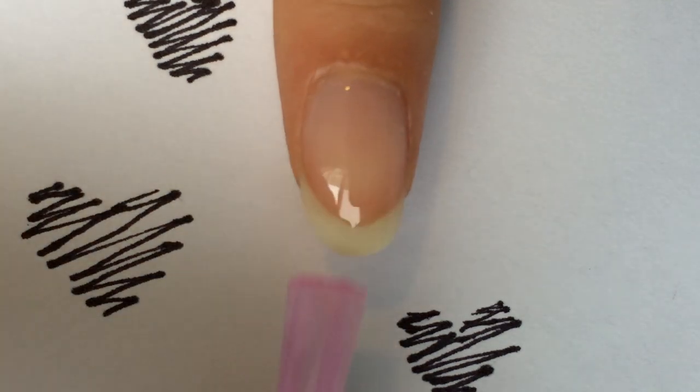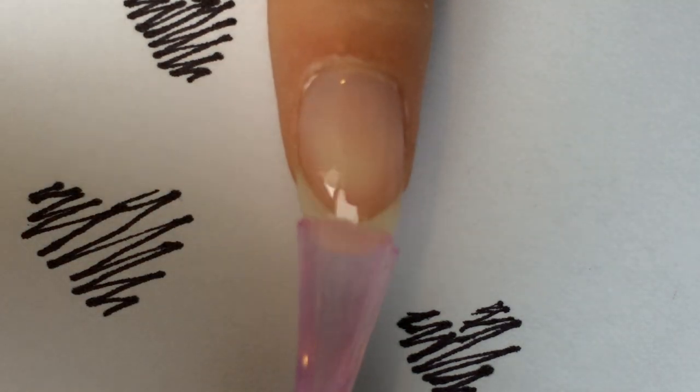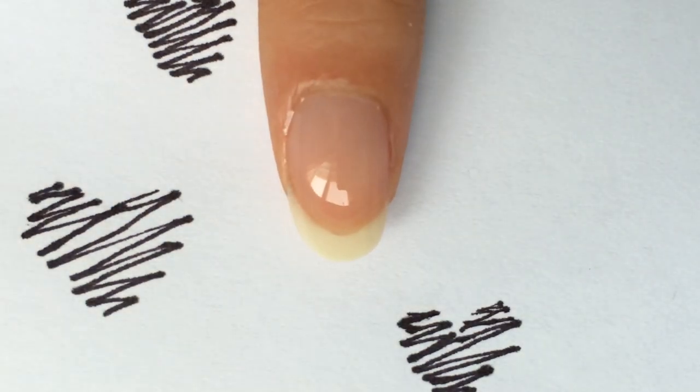First, I'll start with a base coat to protect my nails. It also makes for a smoother surface for applying the color nail polishes.